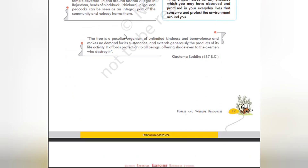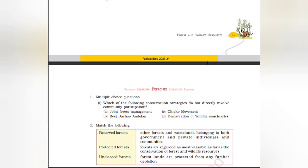The tree is a peculiar organism of unlimited kindness and benevolence that makes no demand for its sustenance and extends generously the products of its life activity. It offers protection to all beings, offering shade even to the axe-men who destroy it. — Gautama Buddha, 487 BC.